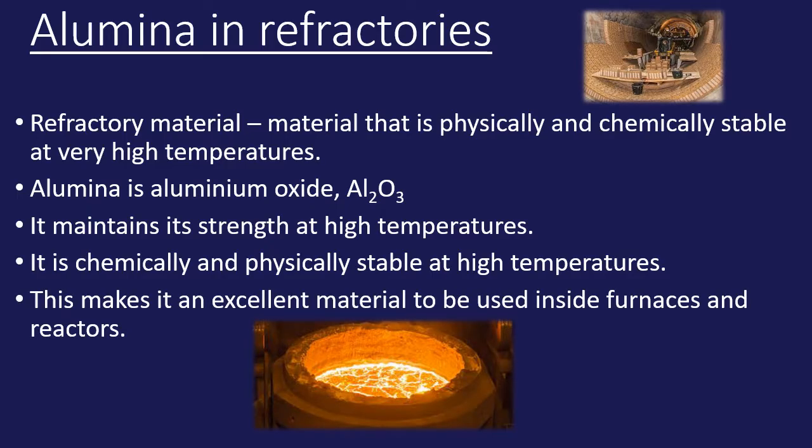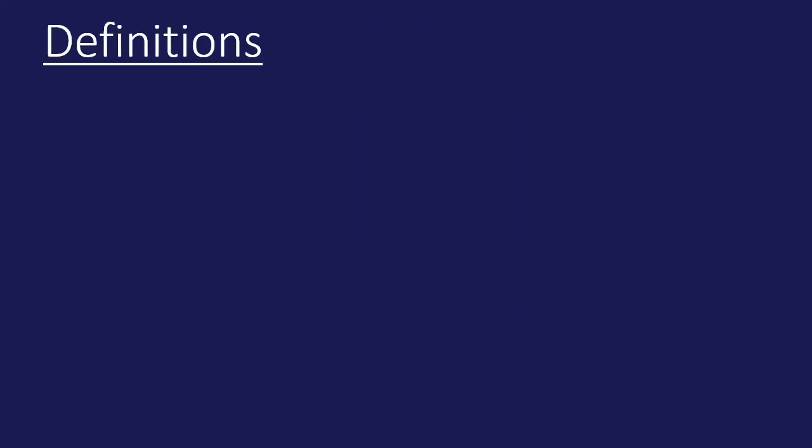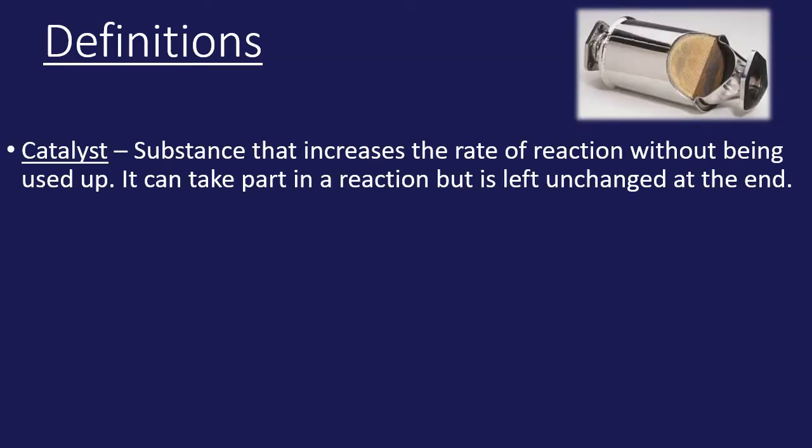That makes it excellent for use inside furnaces and chemical reactors because it's very stable at high temperatures and also has a very high melting point. So therefore it remains stable at high temperatures. Moving on to the third and final section, we're going to look at the uses of transition metals and transition metal compounds. Before we do, a couple of definitions: a catalyst is a substance that would increase the rate of reaction without being used up.